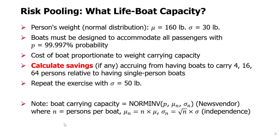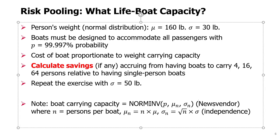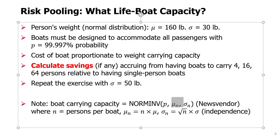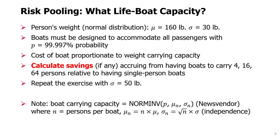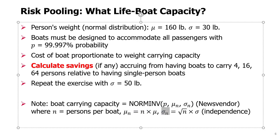The key calculation here, as in the Newsvendor model, is that we need the capacity of the boat to be large enough at probability P for a total weight with mean mu_n and standard deviation sigma_n, which is the distribution of the weight of n persons. This distribution has a mean equal to n times the mean of a single person, but the standard deviation, assuming independence, is square root of n times sigma. So the standard deviation increases at a slower rate, and the coefficient of variation drops as n increases.